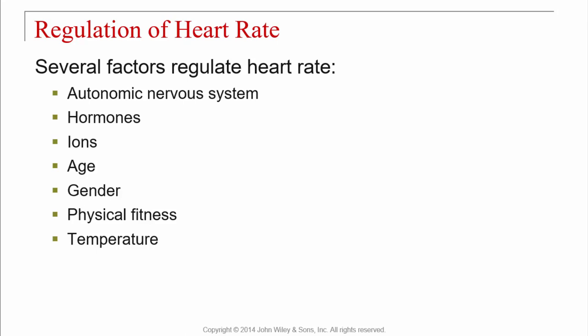Age plays a major factor in heart rate, as does gender. Physical fitness plays a big role — if you're cardiovascularly fit, heart rate tends to be slower. Normal heart rate is about 60 to 80 beats per minute; very fit individuals may be at the lower end around 60, while less fit individuals may be in the 80s and 90s. Temperature also affects heart rate: colder temperatures tend to slow it down, hotter temperatures tend to increase it.